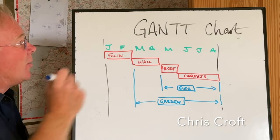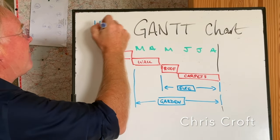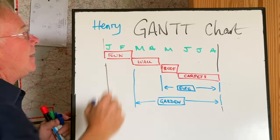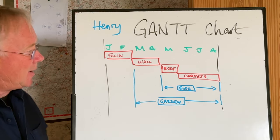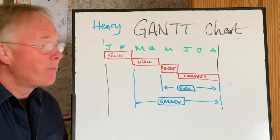What is a Gantt chart? Gantt charts, invented by Henry Gantt in about 1910, are a way of planning your project.